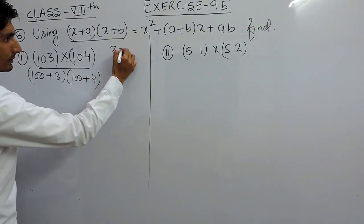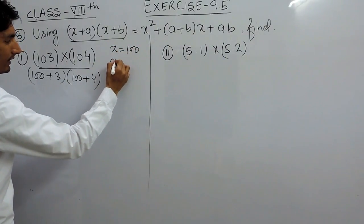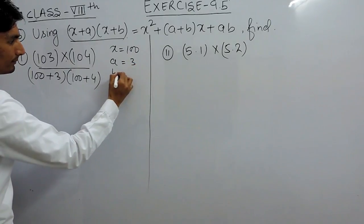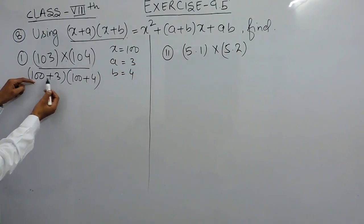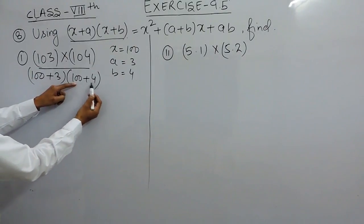Here x becomes 100, a becomes 3 and b becomes 4. So, because 100 plus 3 is x plus a and 100 plus 4 is x plus b.